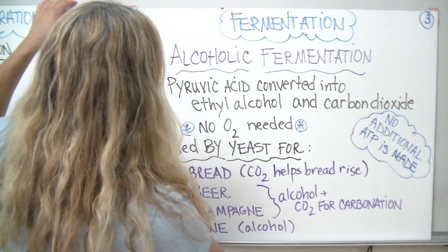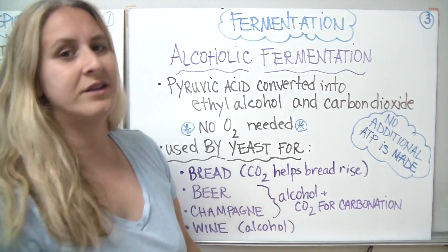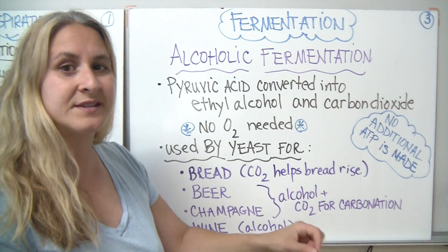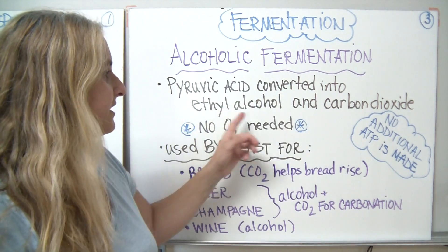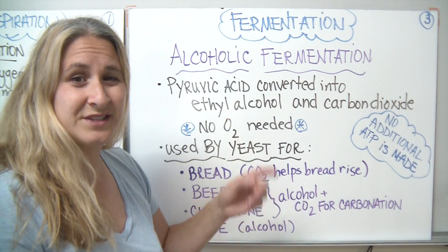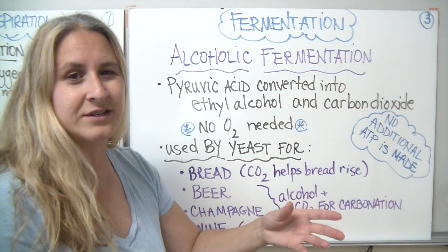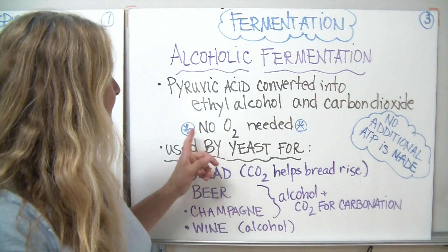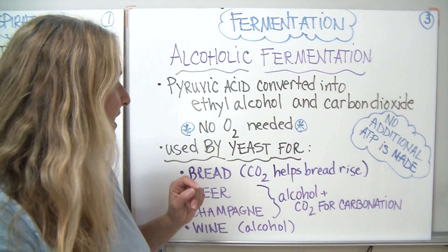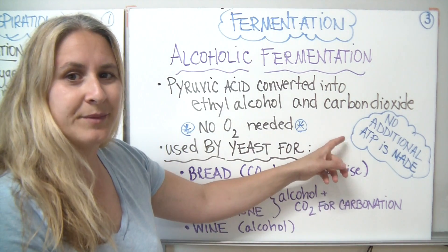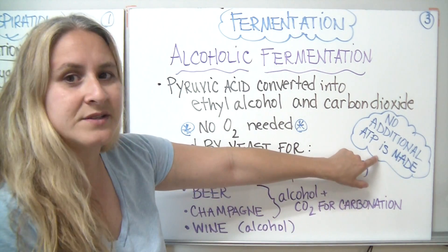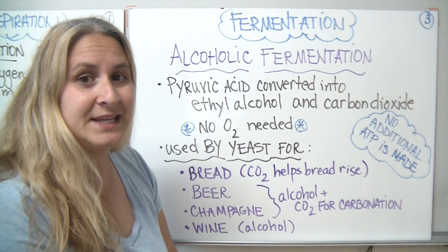Our second type of fermentation is alcoholic fermentation. Alcoholic fermentation again starts with the pyruvic acid from glycolysis and converts it into ethyl alcohol and carbon dioxide. Ethyl alcohol is the drinkable form of alcohol, not the rubbing alcohol used on a wound. Remember, this is anaerobic, so no oxygen is needed. And as with all anaerobic respiration, the only ATP made is during glycolysis — no additional ATP is produced during this phase.